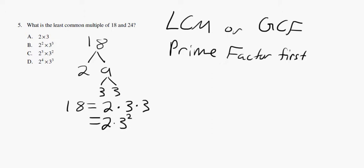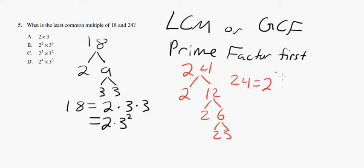Alright, do the same thing for 24. 24 will prime factor into 2 times 12, 2 times 6, and 2 times 3. So 24 is really 2 to the third power times 3.